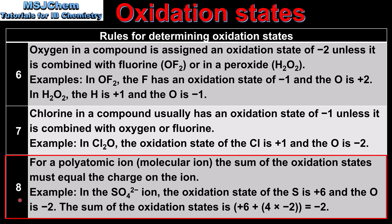Rule 8 concerns polyatomic ions or molecular ions: the sum of the oxidation states must equal the charge on the ion. For example, in the SO4²⁻ ion (sulfate), the oxidation state of S is plus 6 and O is minus 2. The sum of the oxidation states is minus 2, which equals the charge on the ion.